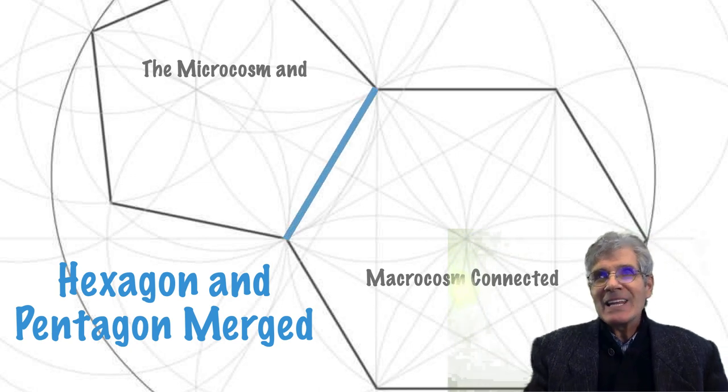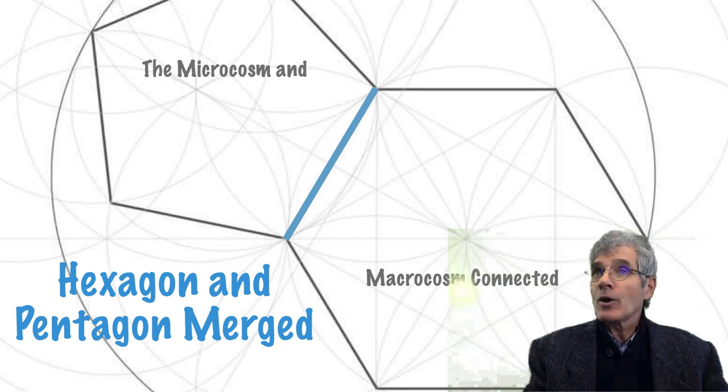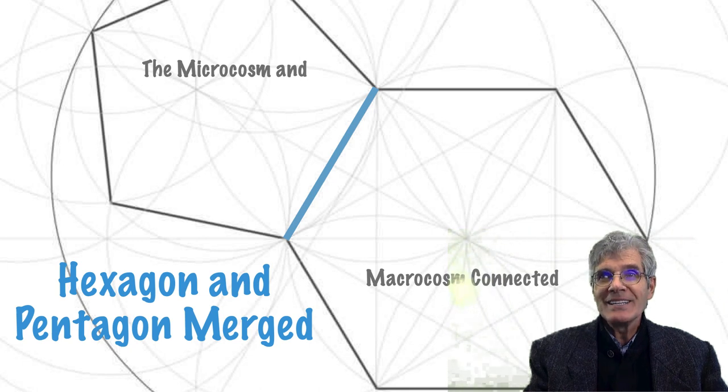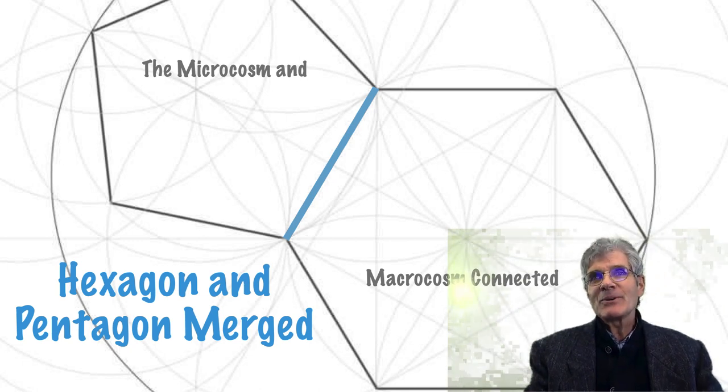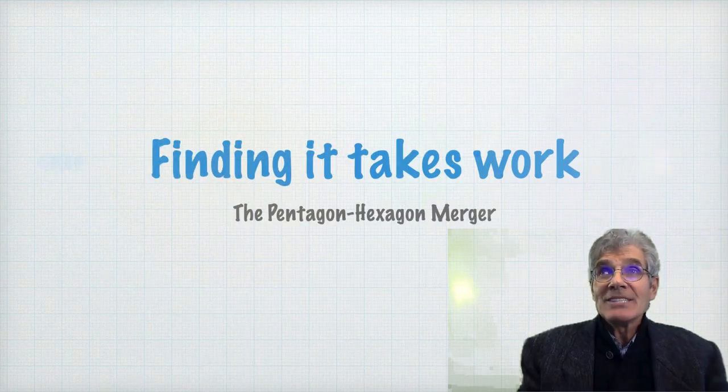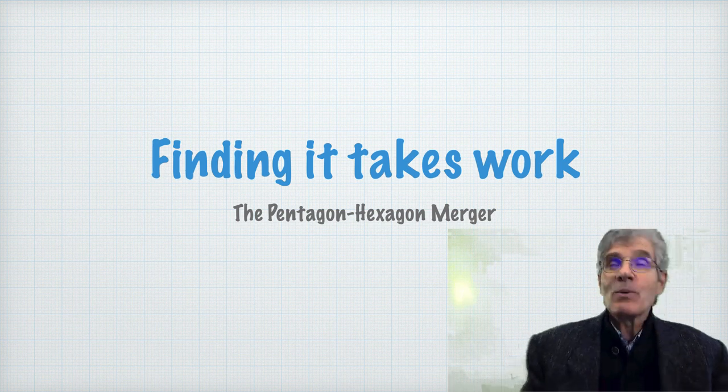So that line, all of the lines, the five on the pentagon, the six on the hexagon, are all exactly the same length. And so that joined side is where they connect, the merger of the macrocosm and the microcosm, the hexagon and the pentagon. Finding that takes work.